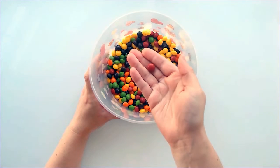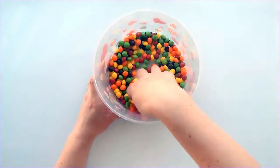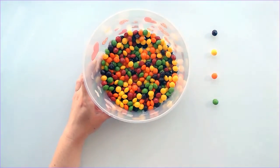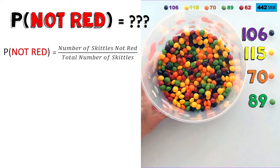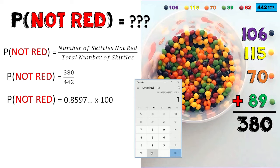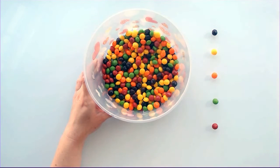For the third problem, let's say that I want to determine the probability of randomly choosing a Skittle that is not red. This means that I can get purple, yellow, green, or orange. I will need to add up the numbers of those Skittles and divide it by the total number of Skittles. 106 plus 115 plus 89 plus 70 is equal to 380. I will divide 380 by 442, then multiply the decimal by 100. This means that I have approximately an 86% chance of randomly choosing a Skittle that is not red.